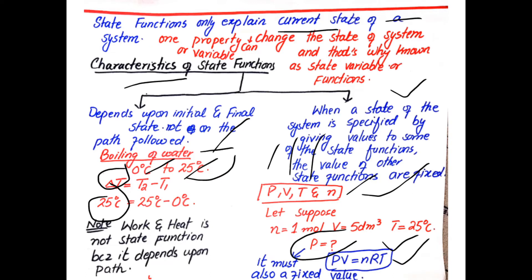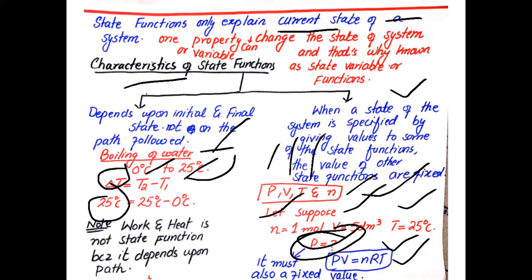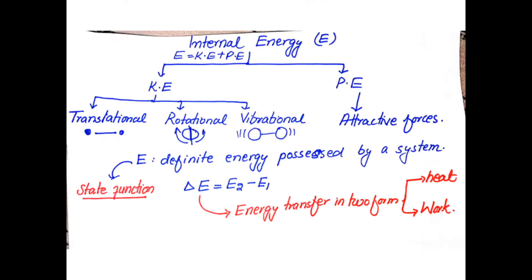If other variables such as pressure, volume, and number of moles are available, the remaining variable like temperature is automatically fixed. There is no other free variable. These are the two characteristics of a state function. Note that heat and work are not state functions — they are path-dependent properties, not path-independent. The major state functions are pressure, volume, temperature, and number of moles.